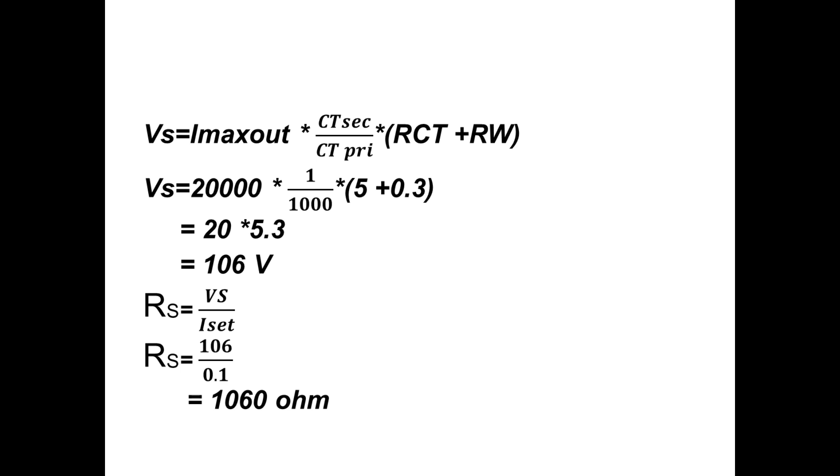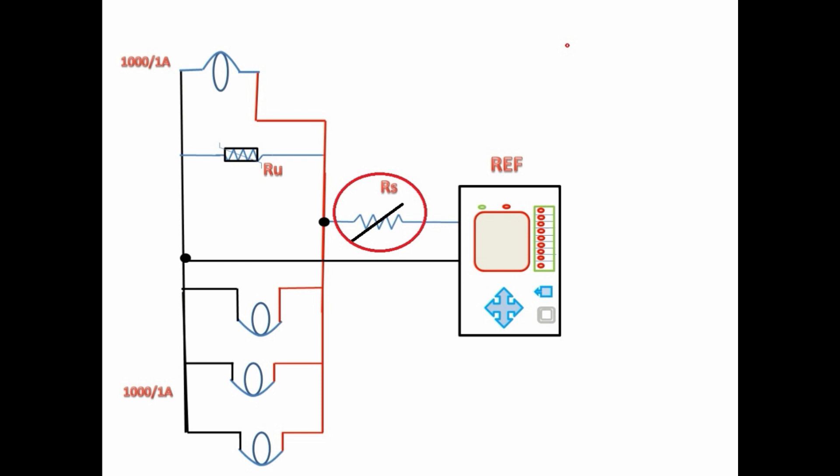We have to note here. Depend on the REF protection pickup, i.e. ISET, the resistor value will change. So, this resistor normally will choose variable resistor.